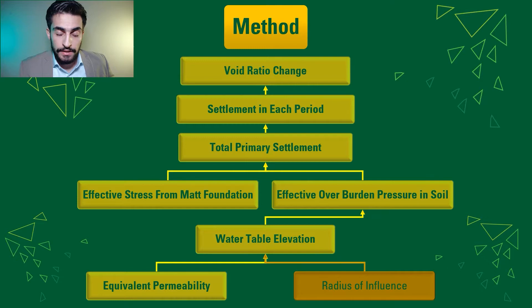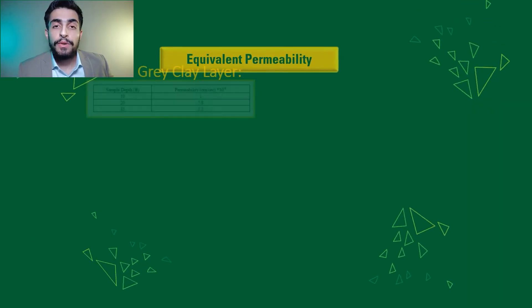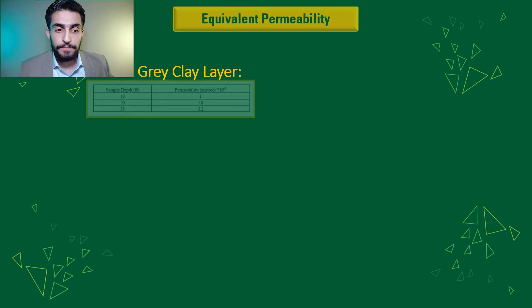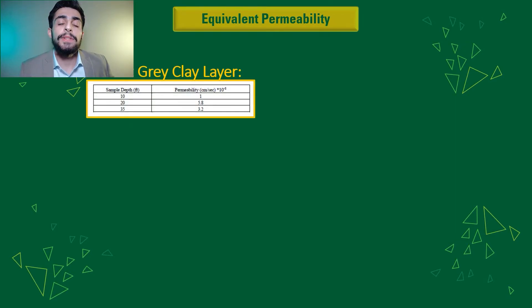But then, the permeability found is through the equivalent permeability method, where we took the permeabilities given to us for the clay layer throughout each depth and measured the average of that permeability values.